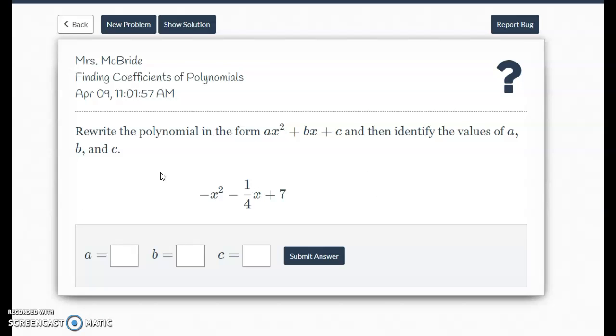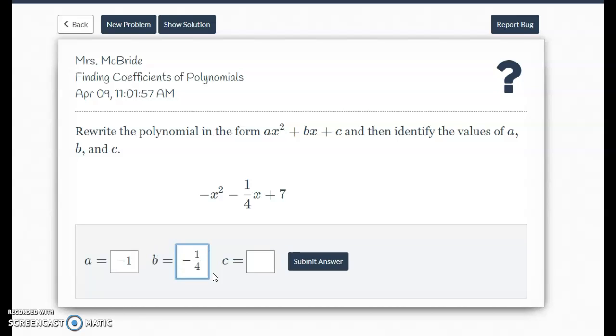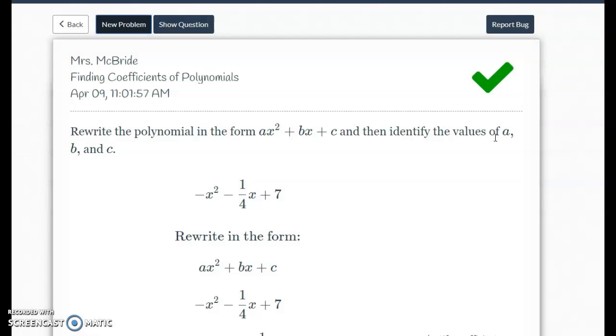One of the other ideas is just being able to find the coefficients. The coefficients come from standard form. We know this is standard form of a quadratic. So the a is what's on the x squared, so that's a negative one. The b is what's on the x, so that'd be a negative one fourth. And again, to get a fraction, you hit the slash symbol on the keyboard and it'll turn it to a fraction. And then a seven.